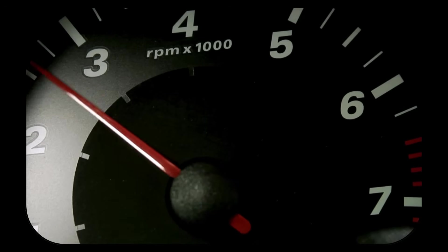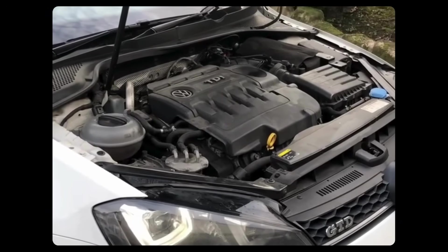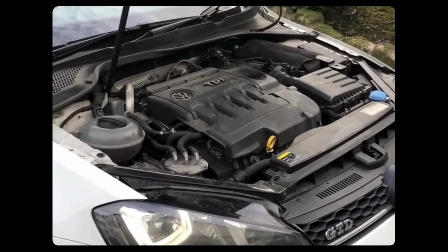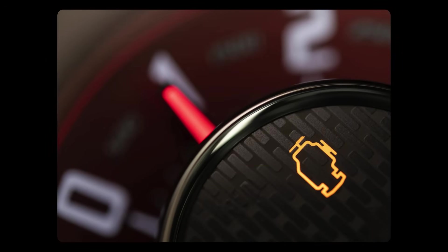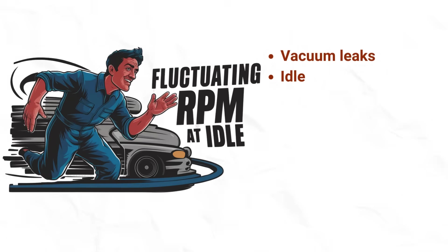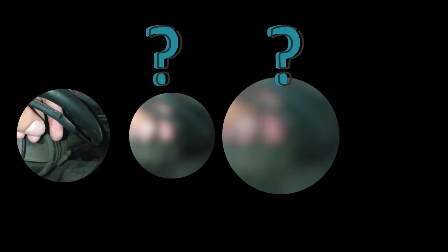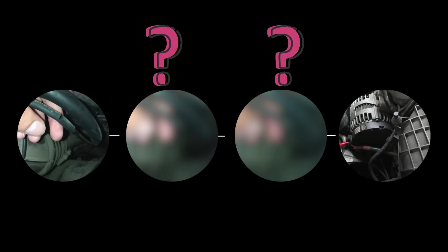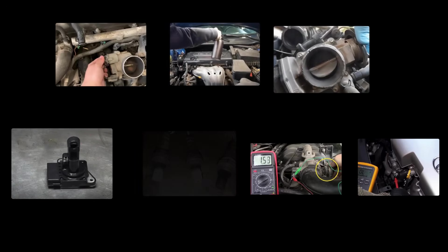Have you ever experienced your car's engine revving up and down erratically while idling? That jerking and shaking feeling can be unnerving, especially if your check engine light is on too. What's causing those RPM fluctuations at idle? In this video I'll expose the 6 main culprits behind an idling engine's unstable revs — from vacuum leaks to sensor issues, clogged air filters to bad batteries — and show how to diagnose each potential cause.